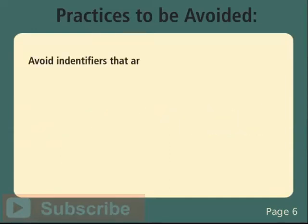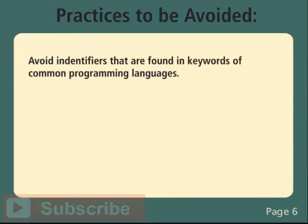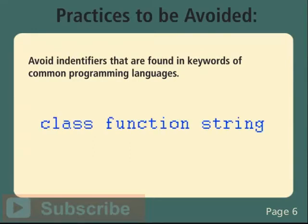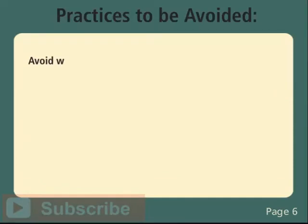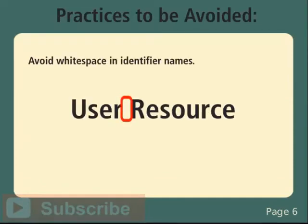Avoid identifiers found in keywords of common programming languages. Some identifiers to avoid include 'class', 'function', and 'string'. This can be confusing for those reading your code and can be a point of contention for the SQL server. Avoid quotation marks, as they are specifically used to identify parts of SQL commands or to limit data object names. Also avoid whitespace in identifier names — while SQL is not particularly sensitive to whitespace, using whitespace in naming can easily misrepresent the object name.